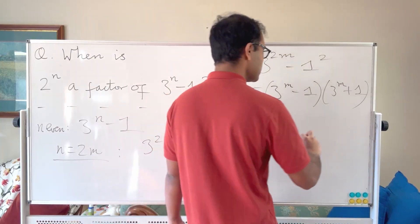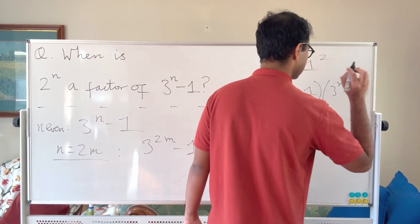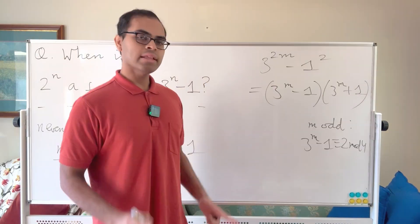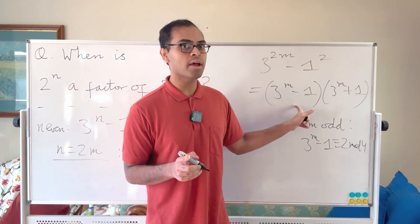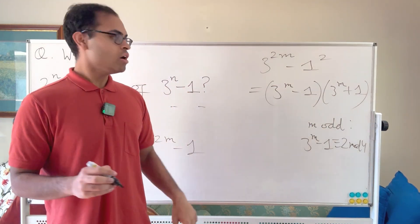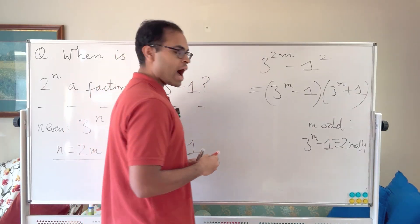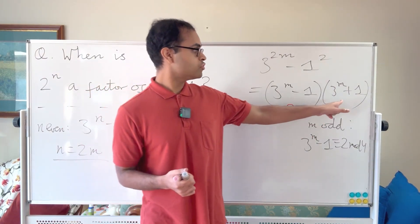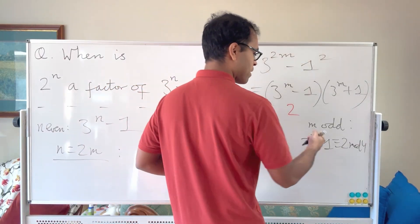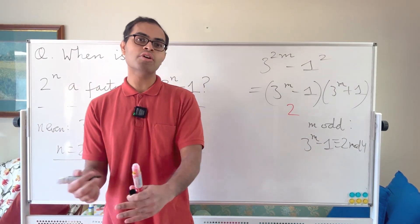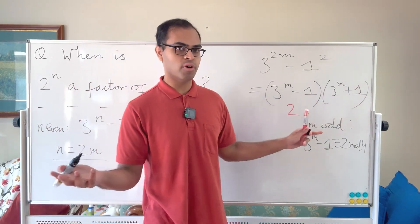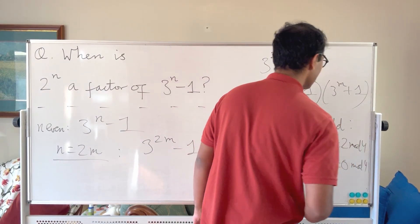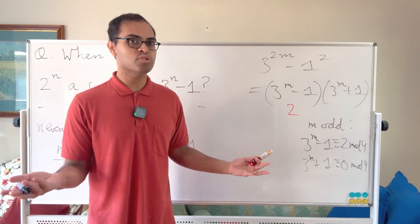When m is odd, we already studied this: 3^m − 1 ≡ 2 mod 4, meaning the highest power of 2 dividing 3^m − 1 is exactly 2. And 3^m + 1 ≡ 2 + 2 = 4 ≡ 0 mod 4, so 3^m + 1 is divisible by 4 — possibly by a higher power of 2.